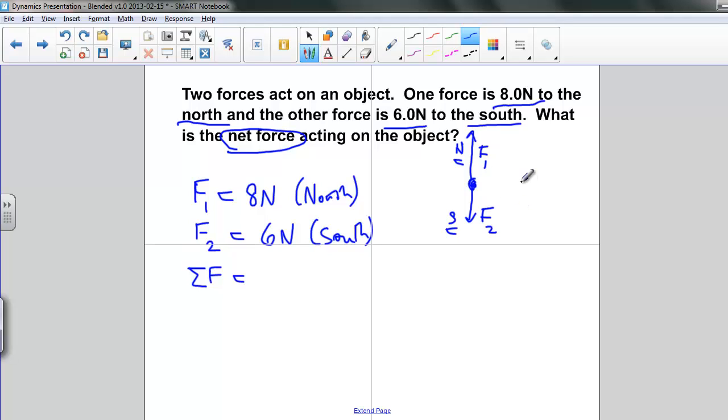And again, we can look at this in terms of what we normally see in terms of coordinate geometry. And what we would have is south would be negative, it's down the page. And north is positive, it's up the page. So we go back up here. 8 newtons north, that's positive. 6 newtons south, that's negative.